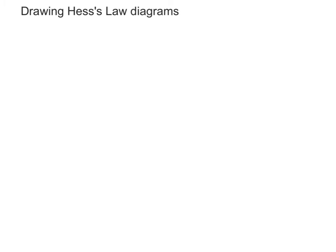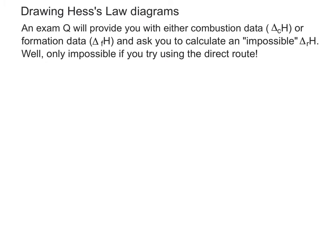So in order to put Hess's law into practice, you need to draw a Hess's law diagram. Now, this is where the trick comes. There's two types of Hess's law diagram that look very similar. So you need to very carefully look at the data that the question gives you. So if an exam question gives you combustion or formation data and asks you to calculate a quote-unquote impossible delta RH value, you've got to remember that it's only impossible if you try and do it using the direct route. So what I'm going to do is draw out the two different types of Hess's law cycles that you could be ending up drawing.